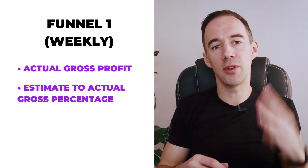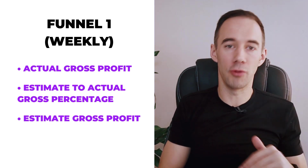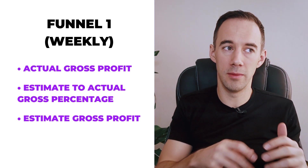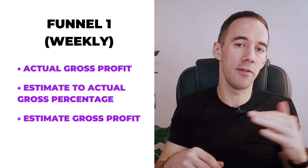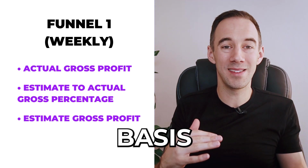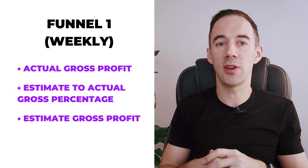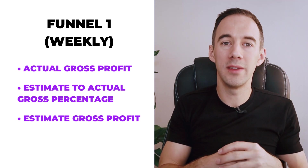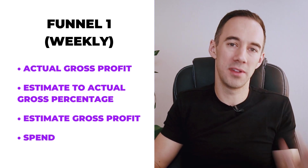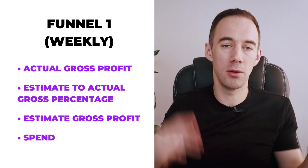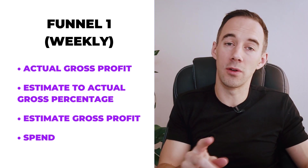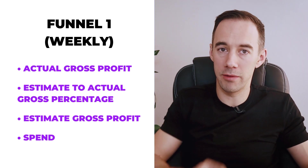The third metric we're going to look at is estimated gross profit — we've found loads of deals, we've purchased them, how much profit do we think we're going to generate? Generally I'll look at that on a weekly basis. The fourth metric on funnel one is going to be how much do we spend. Obviously the more I spend, the more I'm probably going to make. So you've got those nice numbers coming up which allow you to focus on the key areas.